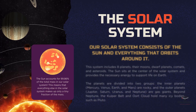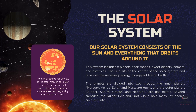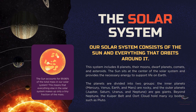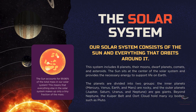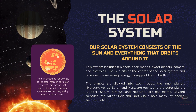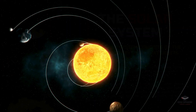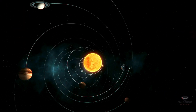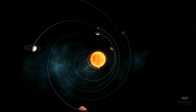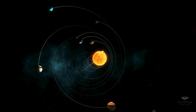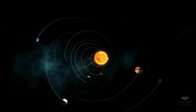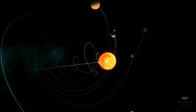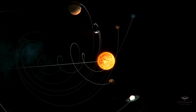Our solar system is a gravitationally bound system, comprising eight planets, their respective moons, and a number of smaller bodies, including comets and asteroids. The Sun resides at the center. It is the primary source of energy that sustains life on Earth, and the Sun constitutes 99.86% of the solar system's total mass — meaning everything else combined is just a tiny fraction.